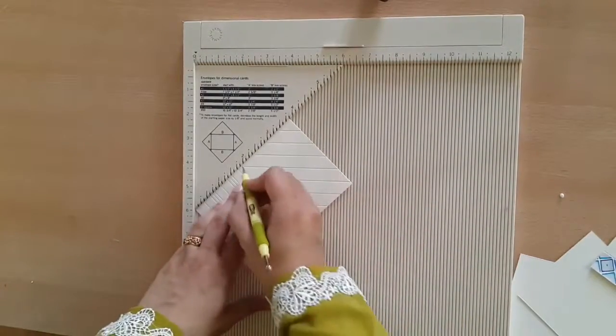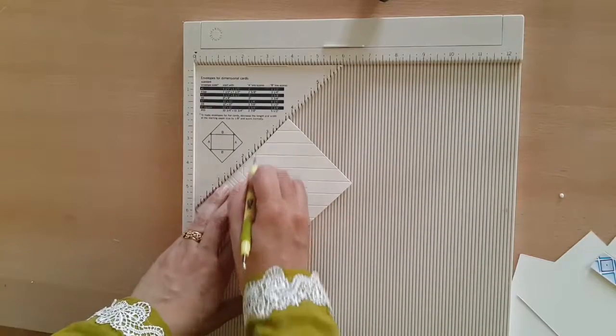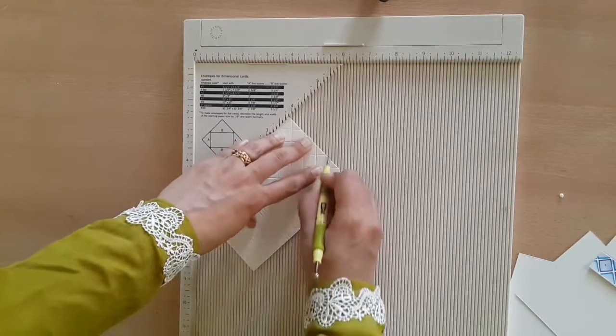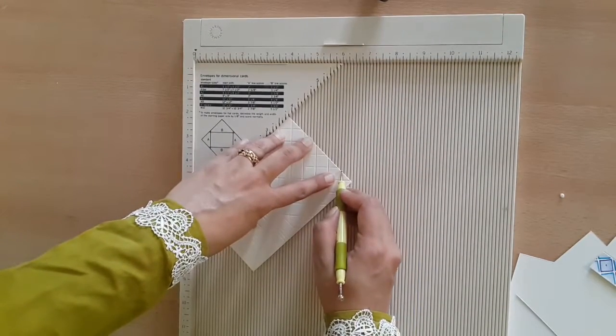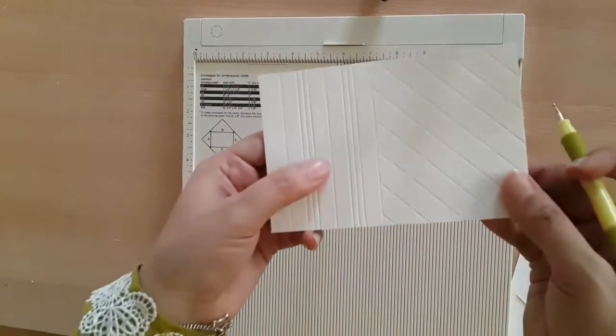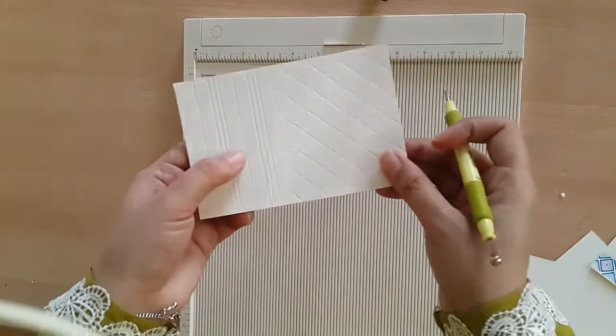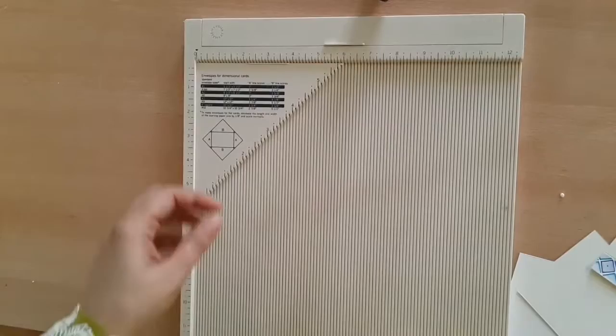And then we will align the longest side of the cardstock and do the exact same thing. So we score at two, two and a half, five and a half, and then we score at six, and you get this beautiful lattice design. So that's two.